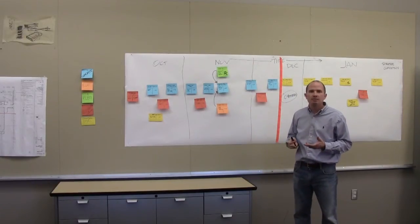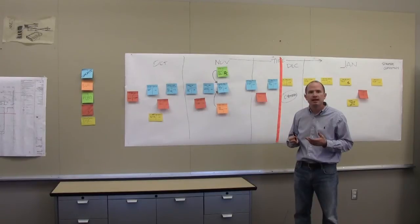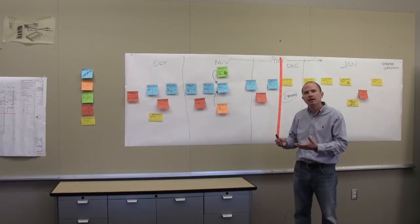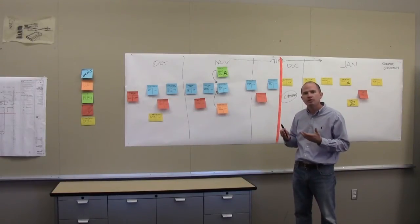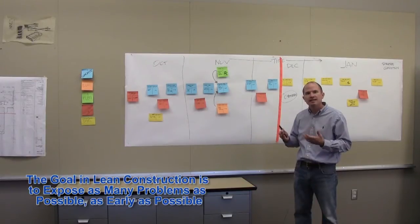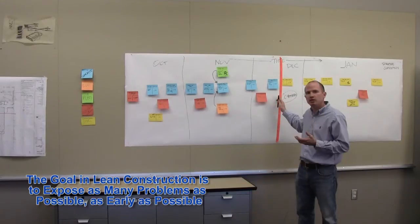Lean construction, many times people think that it is a smoke-and-mirrors type of way of scheduling, that when you do it, you have no problems. But that's the opposite. With lean construction, you're trying to flush out and see as many problems as possible. And this is what the six-week look-ahead does.